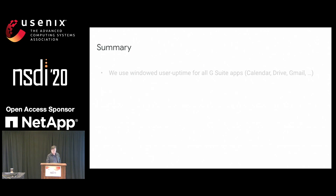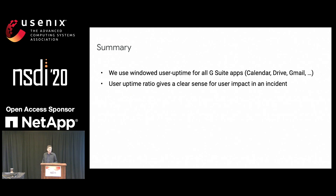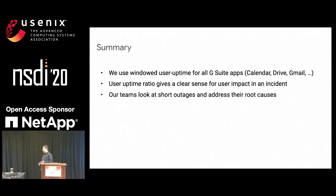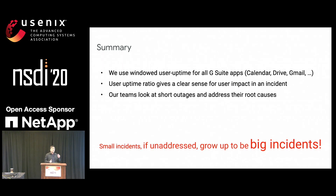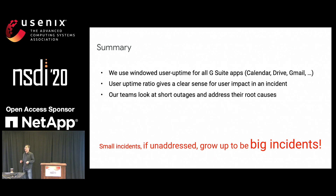To summarize: we use windowed uptime for all G Suite apps — Calendar, Drive, Gmail, Docs, Hangouts, etc. User uptime ratio gives us a clear sense of what the user impact is in an incident. We have teams that look at the short outages that windowed user uptime exposes and try to address them. The key insight is that if you take these small incidents and don't address them, eventually they grow up to be big incidents. There is significant value in going after a one-minute outage, figuring out what happened, fixing it, and hopefully avoiding an hour-long outage in the future.